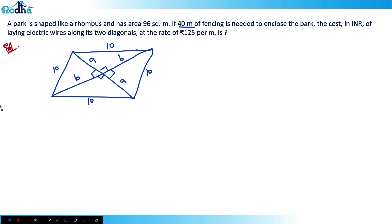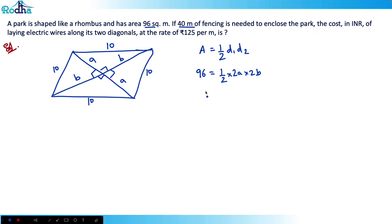The area of the rhombus is 96 square meters. The area of any rhombus is half the product of its diagonals, so 96 = (1/2) × 2A × 2B, which simplifies to A × B = 48.